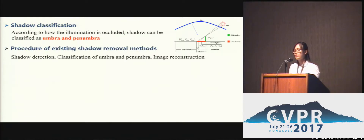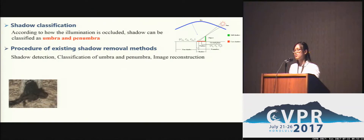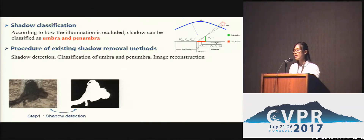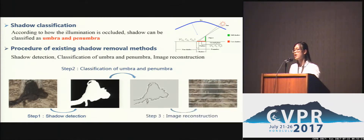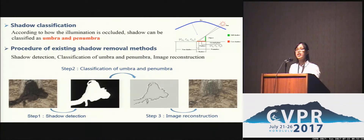The existing shadow removal pipeline often has the following three steps. First, detect shadow regions, then classify the umbra and penumbra regions, and finally design a reconstruction algorithm for the umbra and penumbra regions respectively to remove shadows.